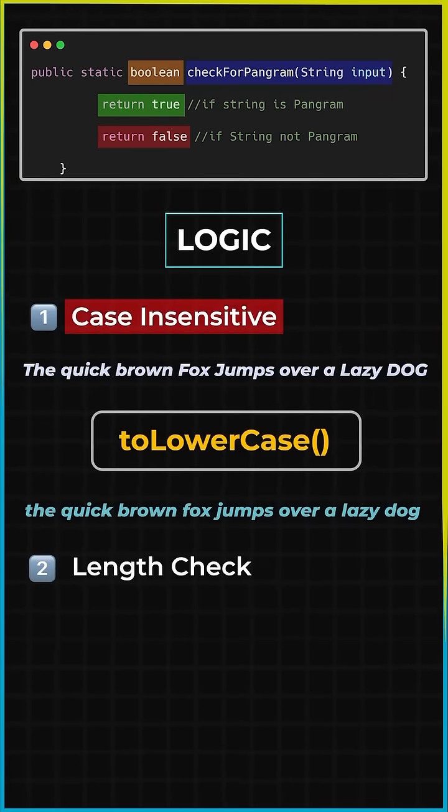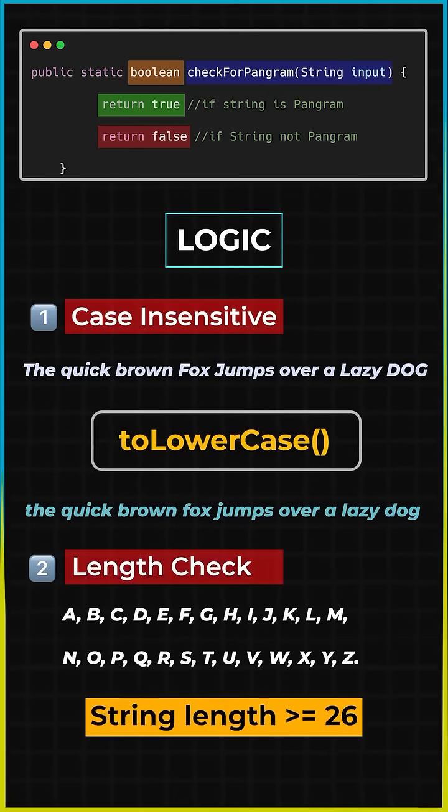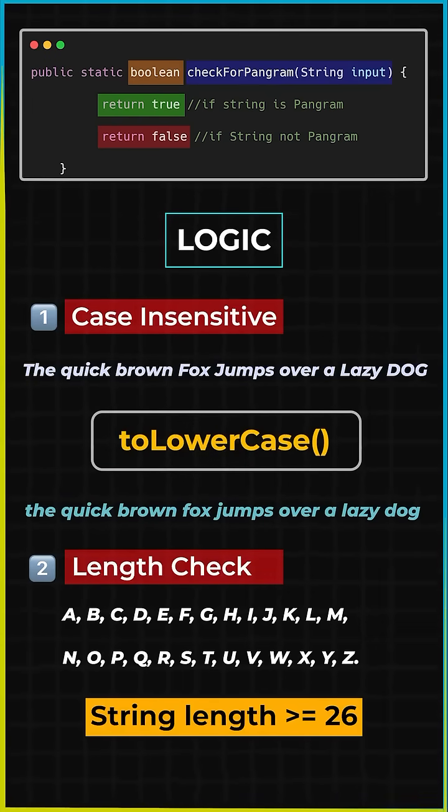Now in order to say a string is pangram all the 26 alphabets should be present, so the minimum length of the string should be 26. If the length of the string is less than 26 we would return false.